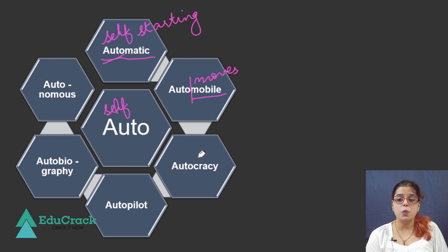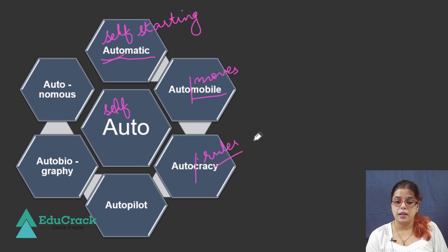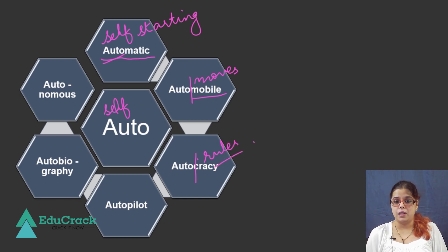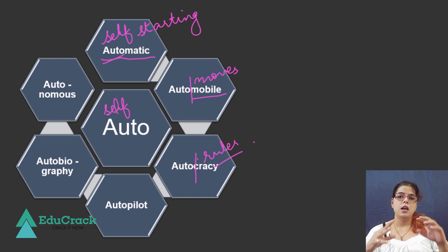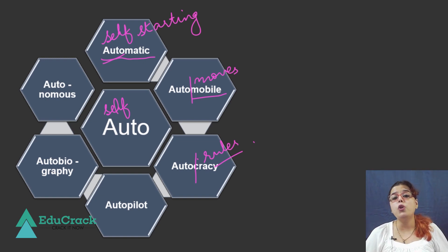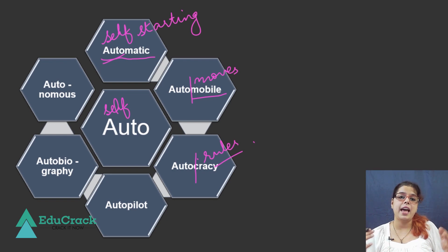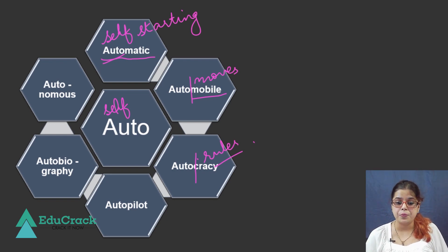We have the word autocracy. The root word cracy means rules. So autocracy is self-government — a place or a government or a city which has its own rules. Autocracy is having a set of rules made by your own self.